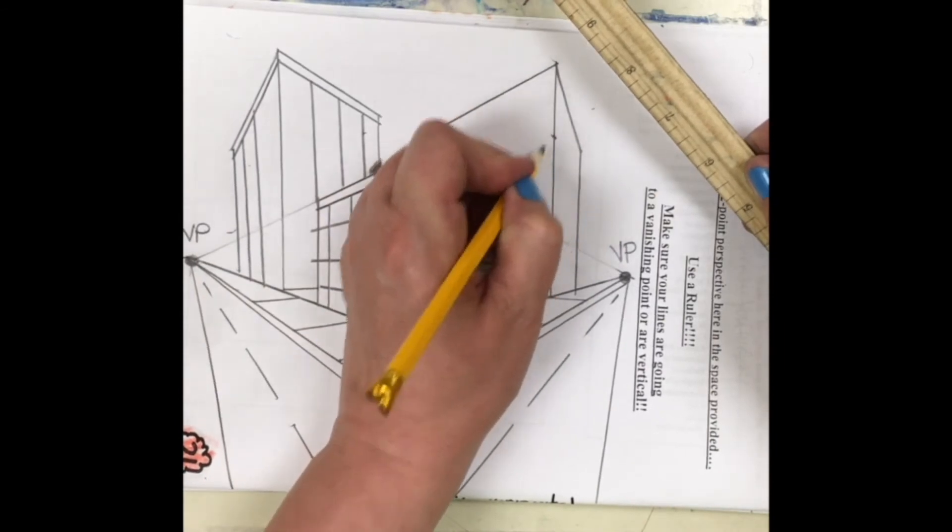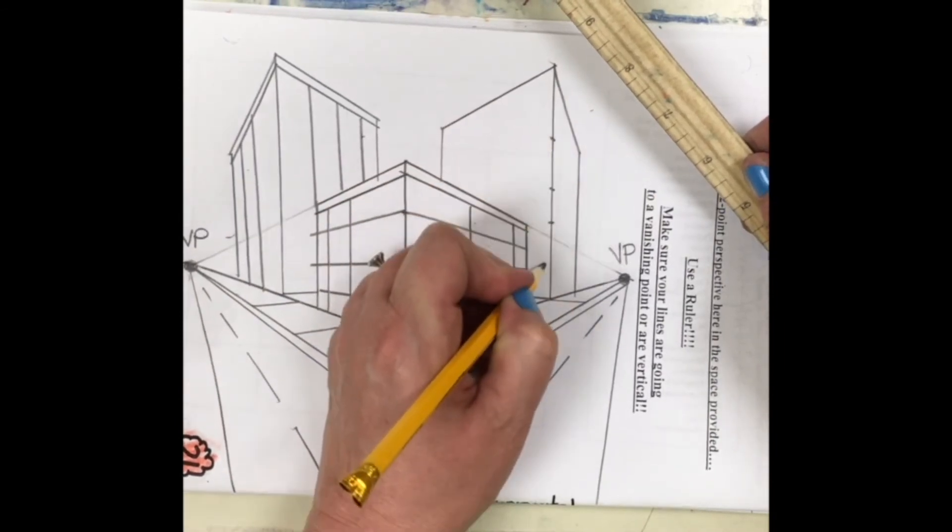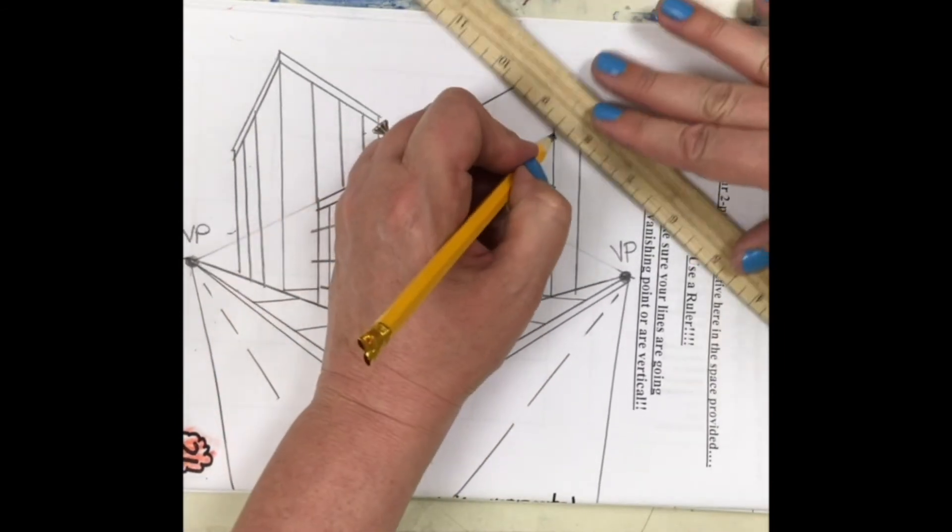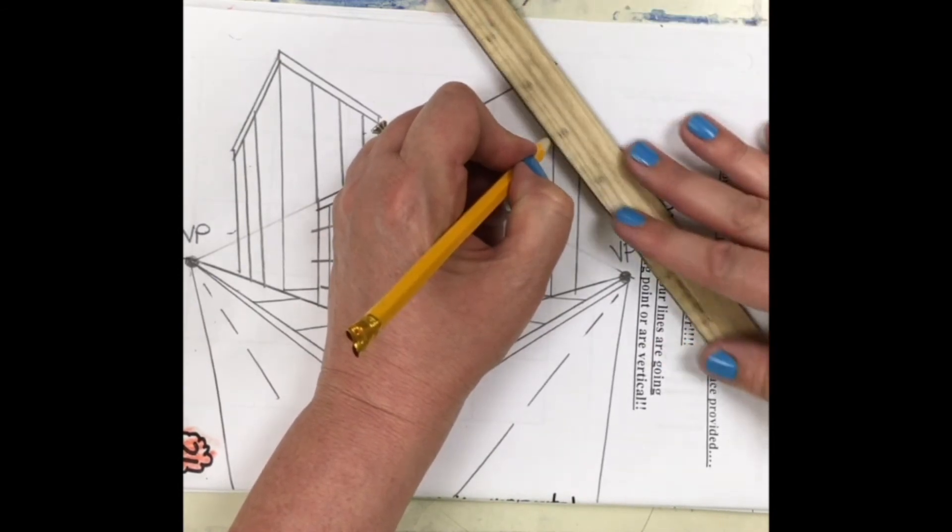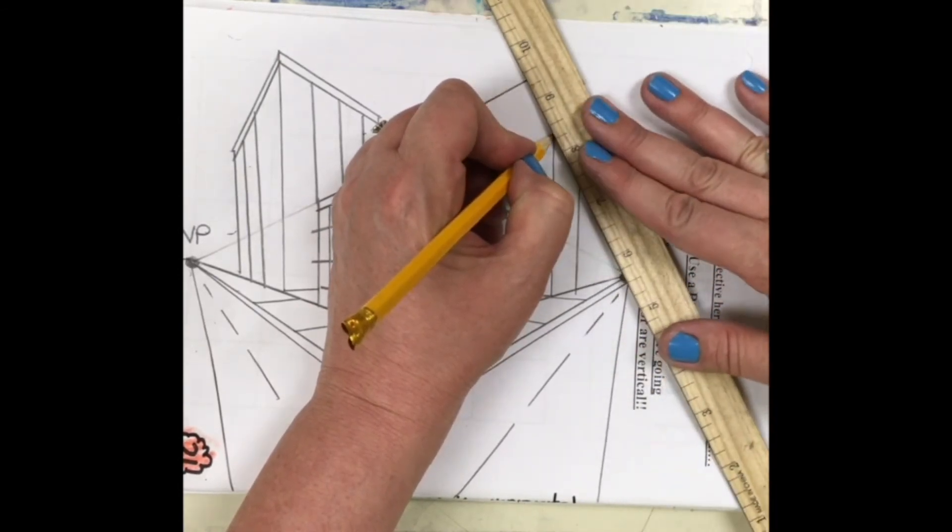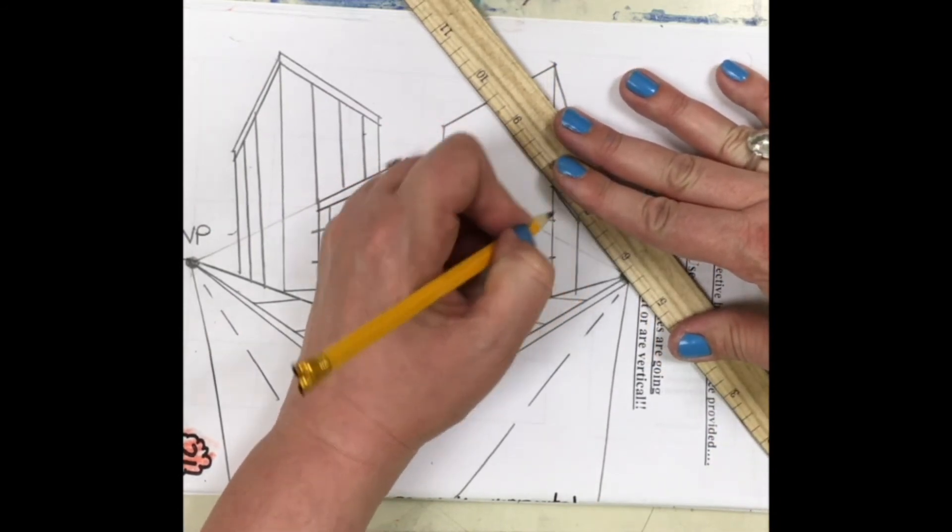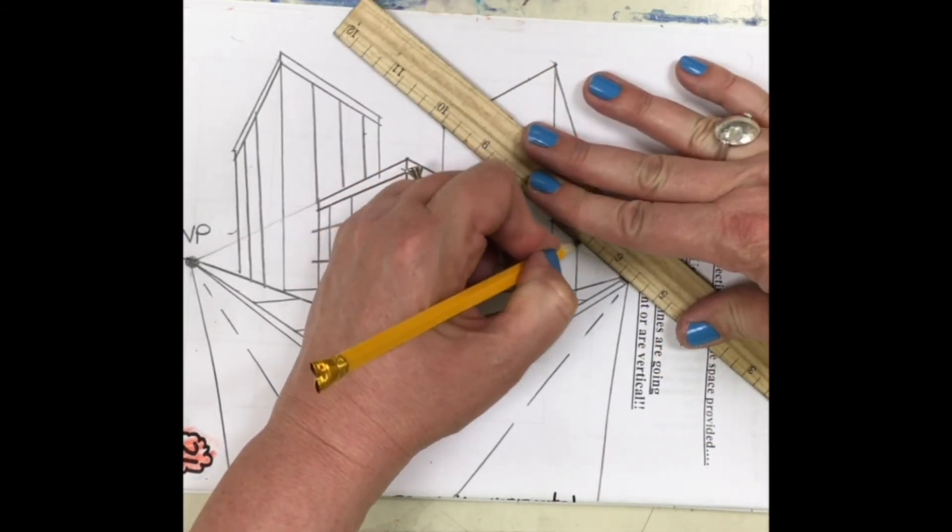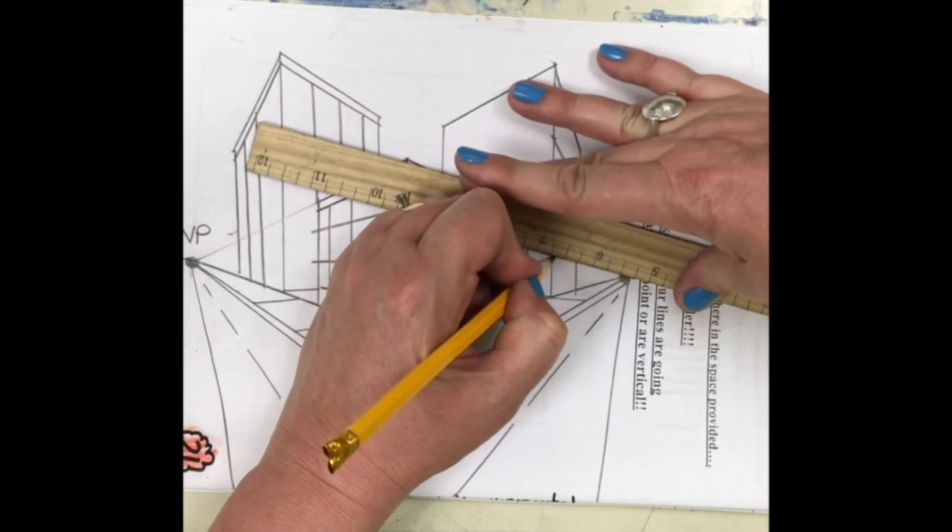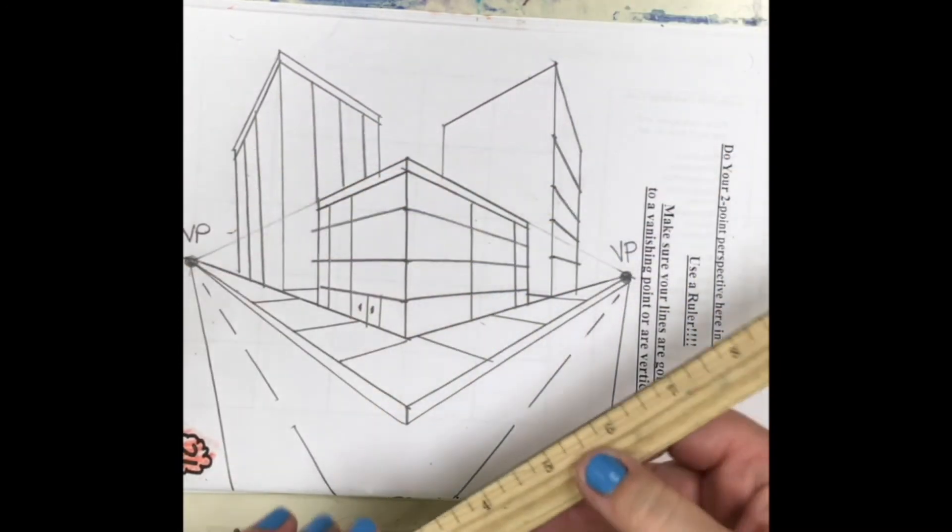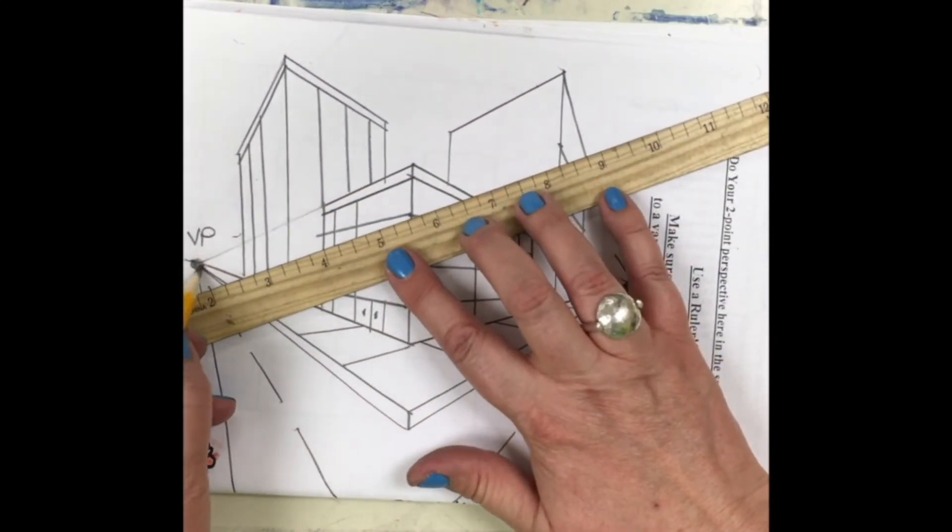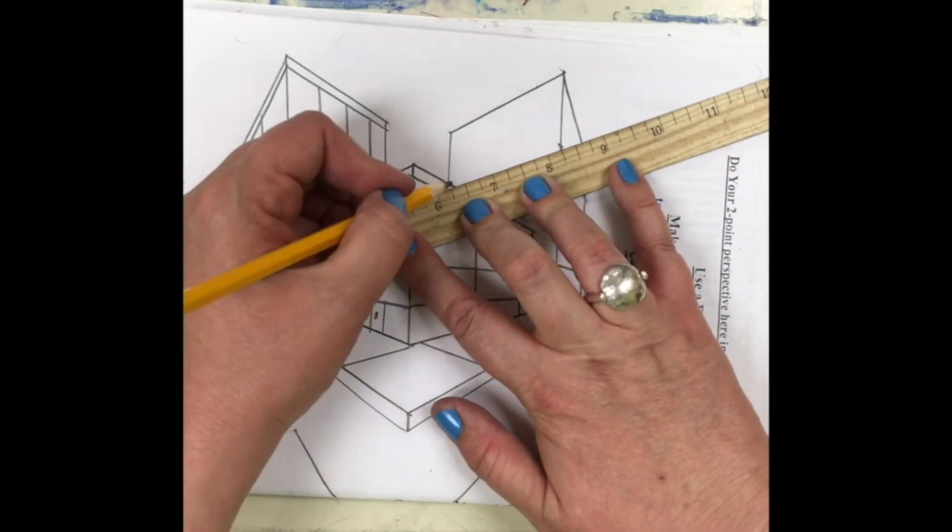And then maybe this one is just going to have windows that go horizontal. So I'm going to line it up, line it up. Always lining it up. My brain thinks that it knows it all and it's going to take it where it thinks it should go, but that's not right. It has to go to the vanishing point.